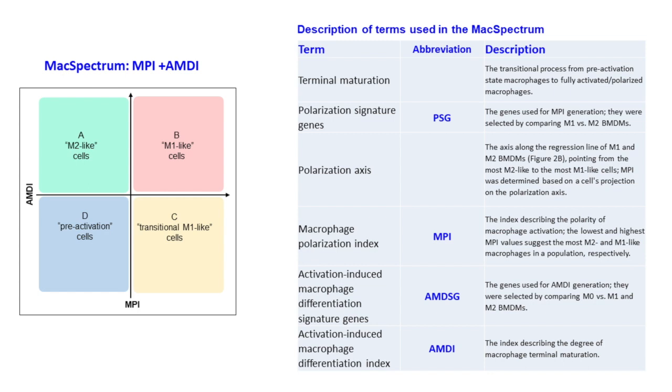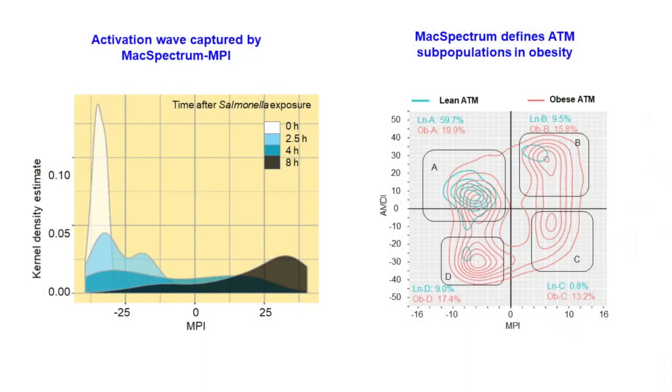Higher MPI indicates more inflammatory states, while higher AMDI indicates more complete terminal maturation. The system aims to capture the dynamic full-spectrum activation states of macrophages under various conditions, and is named MacSpectrum.